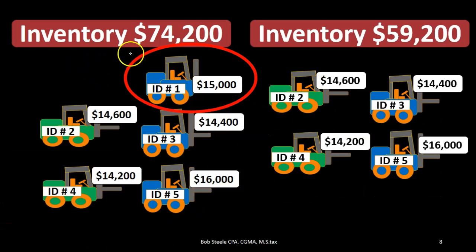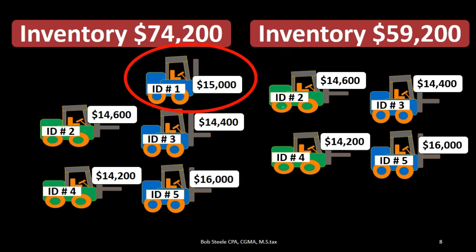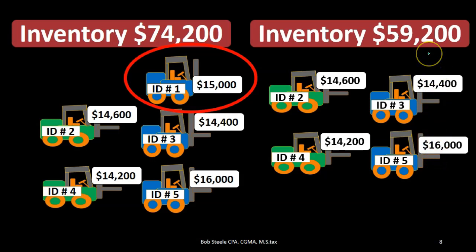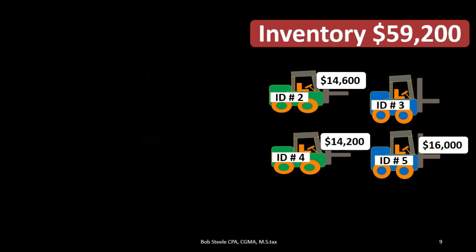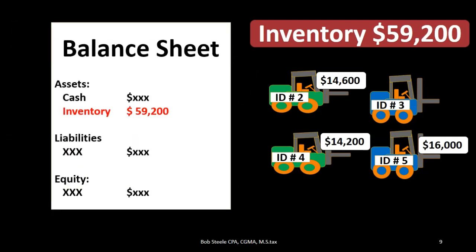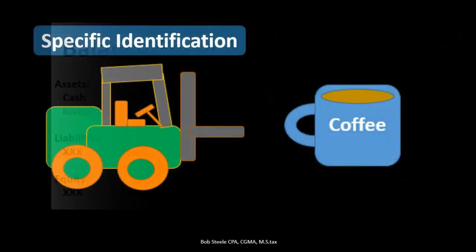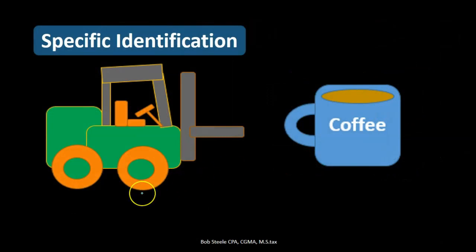The $74,200 is now backed up by our subsidiary ledger with specific identification: adding up the $14,600, the $14,400, the $14,200, and the $16,000, giving us $59,200 in inventory after that sale. That $59,200 is what will now be on the balance sheet. We used specific identification because forklifts are large, we don't have many of them, and they could be distinct in nature with different colors and features.